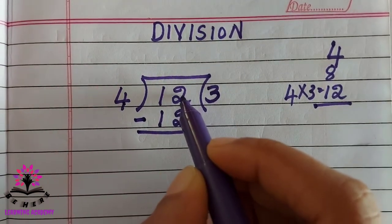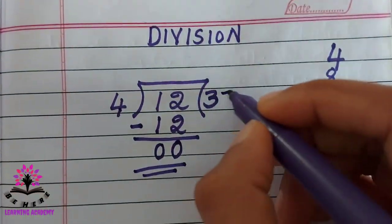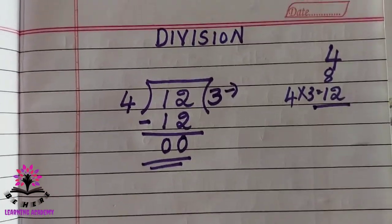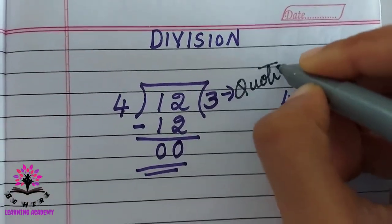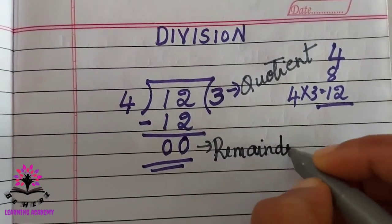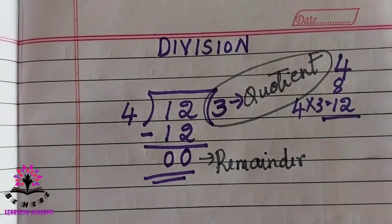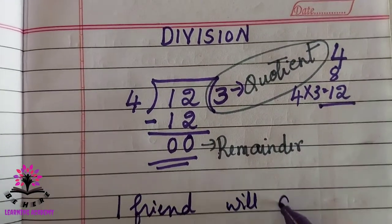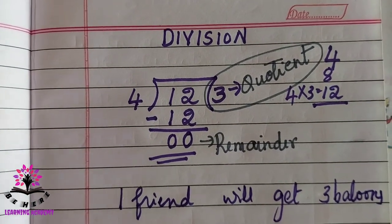Then you subtract: two minus two is zero, one minus one is zero. The result, three, is called the quotient. The remainder here is zero. So one friend will get three balloons.